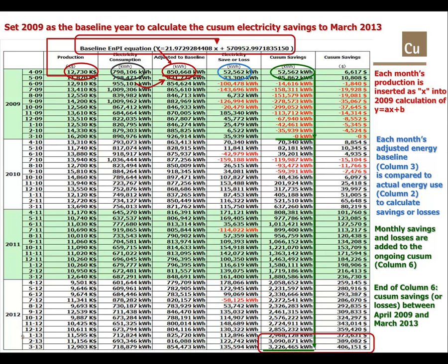By the end of March 2013, the organisation had achieved Q-sum savings of 3,226,465 kilowatt hours, and that had a value of $406,151 when compared to that 2009 energy baseline.